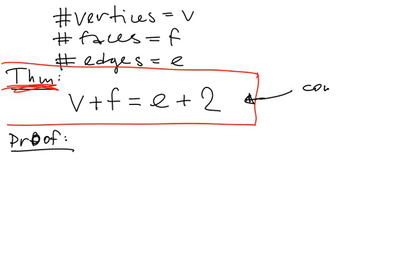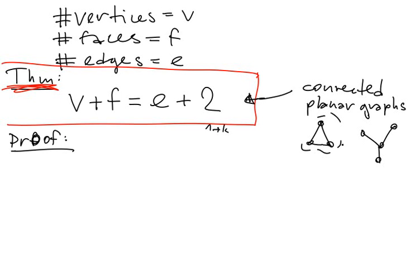Also, this holds only for connected planar graphs. Things like this are not allowed. If we would like to consider non-connected planar graphs, we would have to add here something like 1 plus k, where k is number of these parts. In this case, k would be equal to 1. Yeah, but this is some kind of nuance. We don't really have to care about it, because in most of the cases we are always working with planar graphs, because they are more natural.